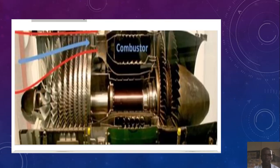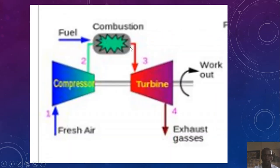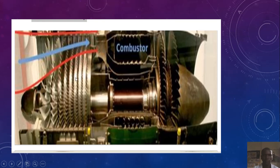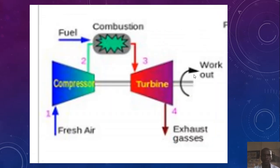Looking at the diagram, you can see where the combustor is — the combustor is here, this is the compressor and the diffuser, and this is the exhaust. We have fresh air coming into the compressor, then we have the combustor, we have the turbine, then we have the exhaust gases moving out and work output — we see the power getting out.